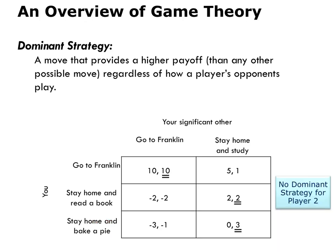What we see here is that your significant other has no dominant strategy. For them, if you go to Franklin, they should go to Franklin. But if you stay at home and either read a book or bake a pie, they should stay at home and study. Your significant other doesn't have one move that provides a higher payoff regardless of how you play.